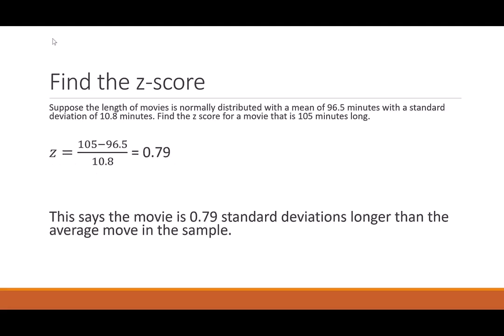So this time, this says, this movie is 0.79 standard deviations longer than the average movie in the sample. So I'm looking at something bigger. Again, I could go back to Desmos and look at that.